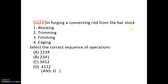In forging a connecting rod from bar stock, the correct sequence of operations is: Edging → Blocking → Finishing → Trimming (EBFT). Trimming is the final operation. The sequence corresponds to option 4-1-3-2, so option D is correct.